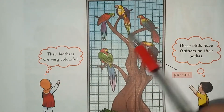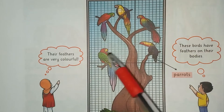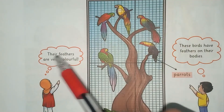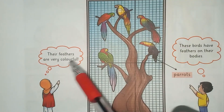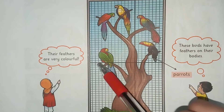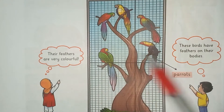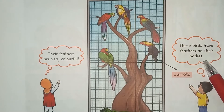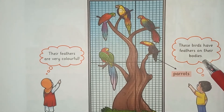This picture shows a beautiful parrot and birds. Their feathers are very colorful. Inke pankh bohat rangeen hain. These birds have feathers on their bodies. In parindon ke jisam par pankh hain.